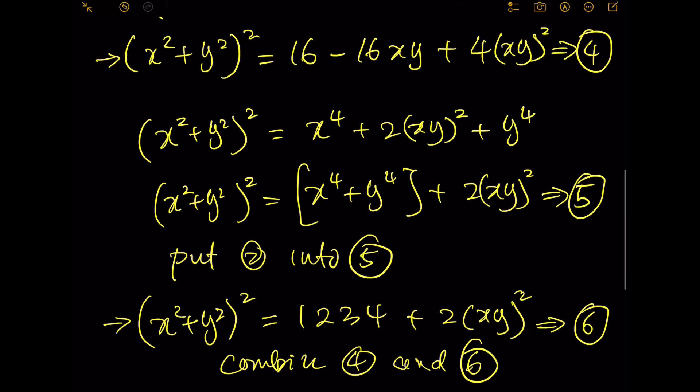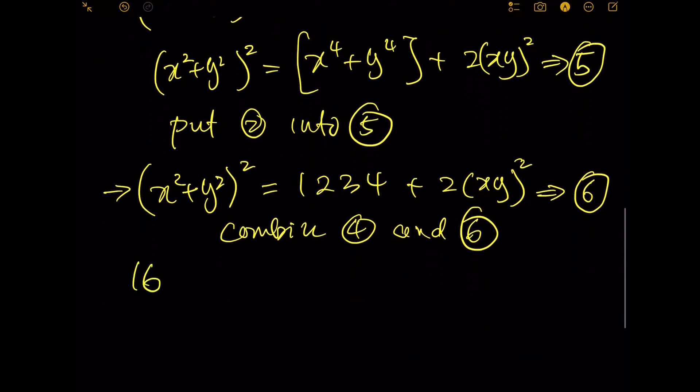The right hand side of 4 and 6: 16 minus 16xy + 4(xy)^2 equals the right hand side of equation 6, which is 1234 + 2(xy)^2.